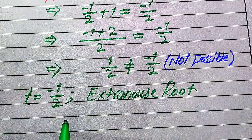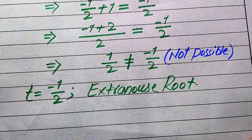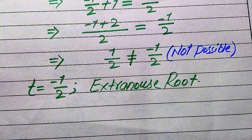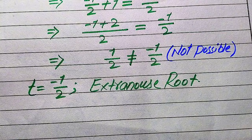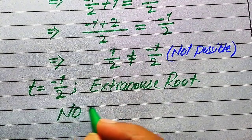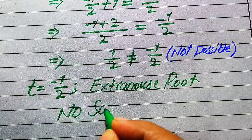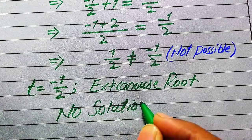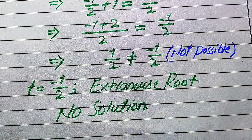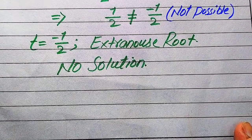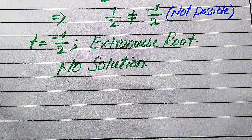So t equals minus 1/2 is the extraneous root of the given equation. We cannot get any value of t which satisfies our given question statement. So we conclude that this question has no solution. This is the final conclusion about the first method.